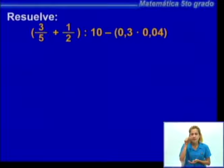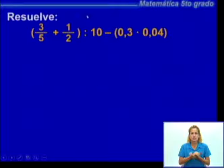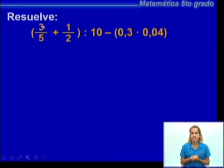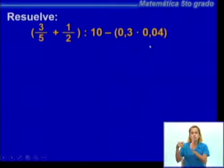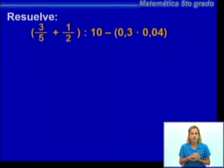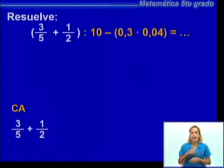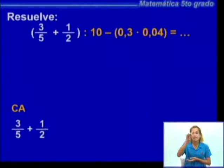Si observan este ejercicio combinado, estamos en presencia de una sustracción donde el minuendo es el cociente entre una adición de fracciones y un número natural, y el sustraendo es una multiplicación de expresiones decimales. Podemos realizarlo siguiendo el orden operacional como ya les decía: realizamos primeramente el primer paréntesis, que es 3/5 más 1/2.